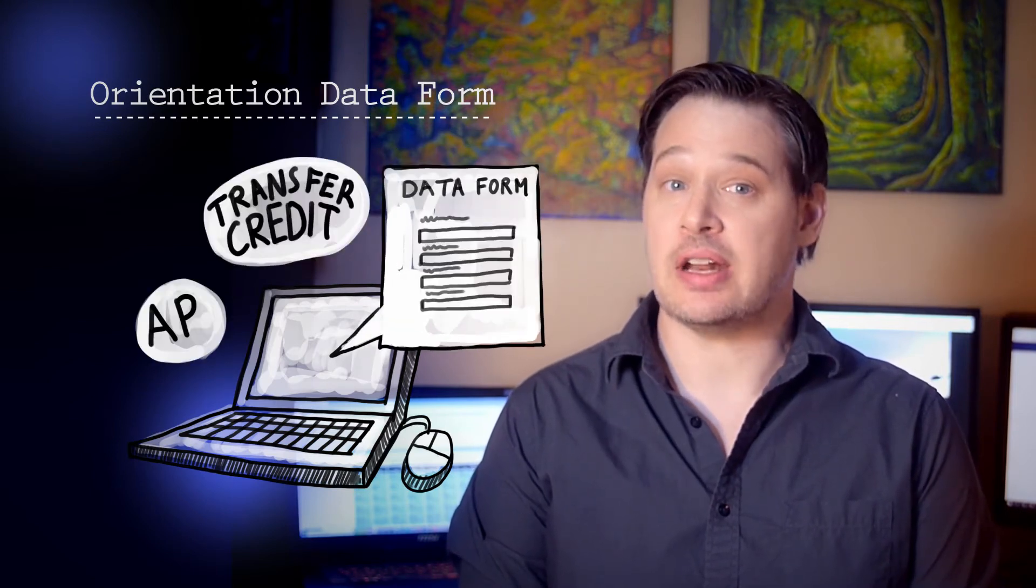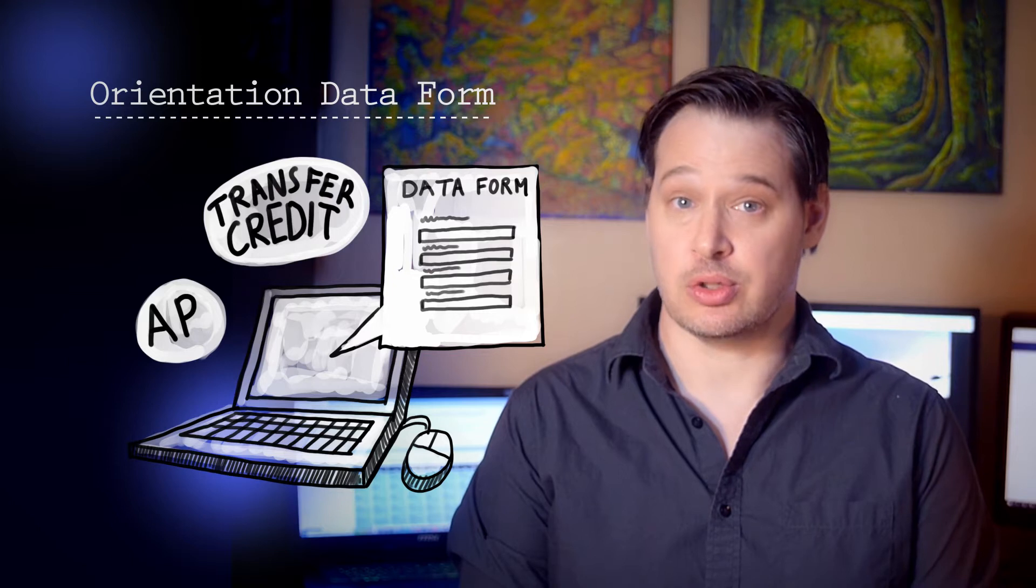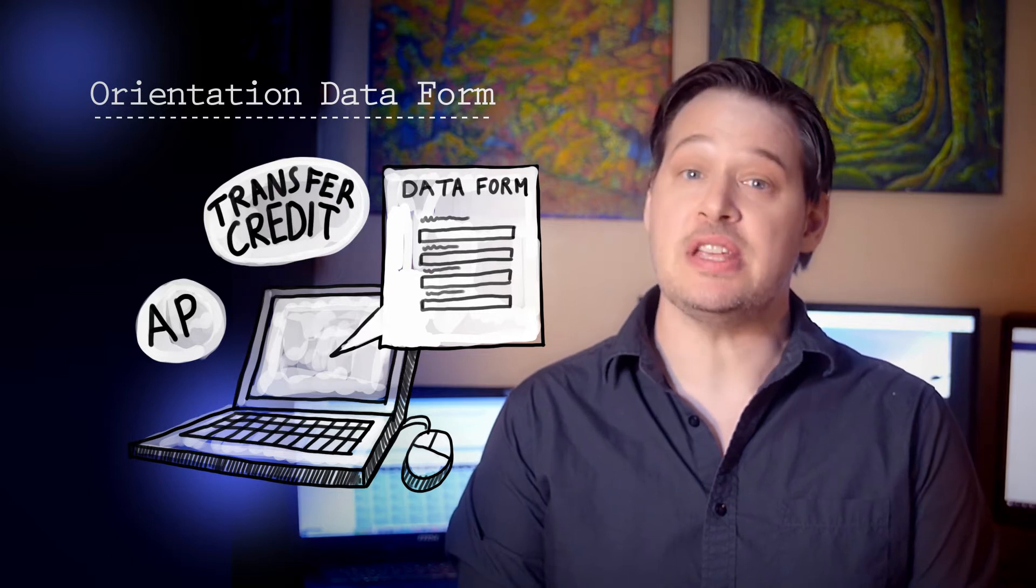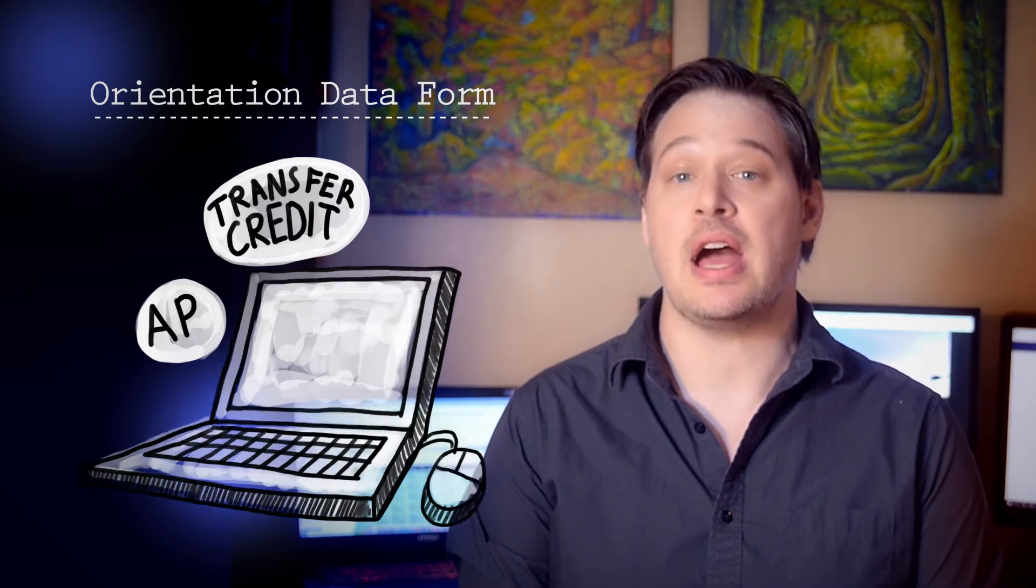We use this form to make your schedule, so if you don't include AP and recent college transfer credit on it, we do not know about it. We can't take AP scores or college credit from a high school transcript. Your AP scores must be sent by College Board, school code 2925.